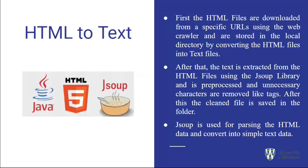After completing the crawler part, files are stored as HTML. Since the search engine does not need the unnecessary information HTML contains — such as CSS files, JavaScript files, or other tags — this step reads all the stored HTML files, processes and cleans them using the JSoup library, and stores the clean text files into a separate folder for further processing by the search engine.